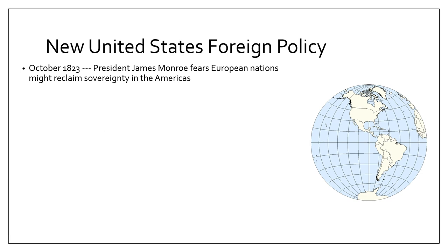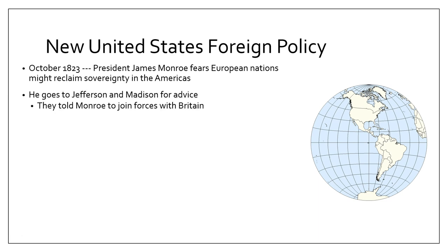In October of 1823, President James Monroe was afraid of European nations trying to reclaim their sovereignty in the Americas and reestablish their empires there. He went to two former presidents for advice — Thomas Jefferson and James Madison — and both of them told Monroe that he should join forces with Britain, so that the United States and Britain working together could keep other European nations out of North and South America.